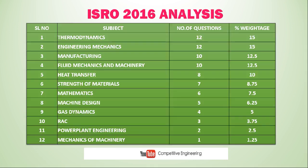Looking at the chapter-wise analysis: Thermodynamics had 12 questions, Engineering Mechanics had 12 questions, Manufacturing and Production had 10 questions, Fluid Mechanics and Machinery had 10 questions, Heat Transfer had 8 questions, Strength of Materials had 7 questions, Mathematics had 6 questions, Machine Design had 5 questions, Gas Dynamics had 4 questions, RAC had 3 questions, Power Plant had 2 questions, and Mechanics of Machinery had 1 question. Notably, there is no Industrial Engineering in the ISRO exam.